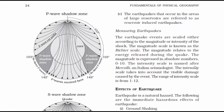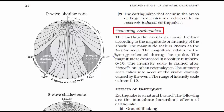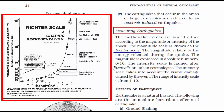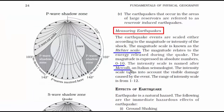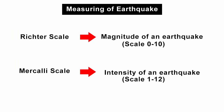The next topic is measuring earthquakes. A seismograph is used to detect the vibration caused by an earthquake. The strength or magnitude of an earthquake is measured using the Richter scale on an intensity scale of 0 to 10, with 10 being the highest. The intensity of the earthquake is determined by the Mercalli scale, which ranges from 1 to 12. Remember: Richter scale determines magnitude and Mercalli scale determines intensity.